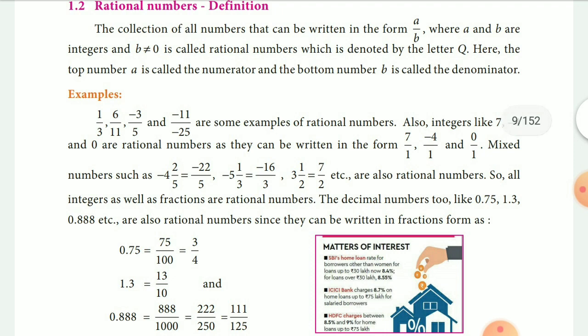First, what do you mean by rational number? A rational number is of the form A by B where A and B are integers and B is not equal to 0, and it is denoted by the symbol Q.